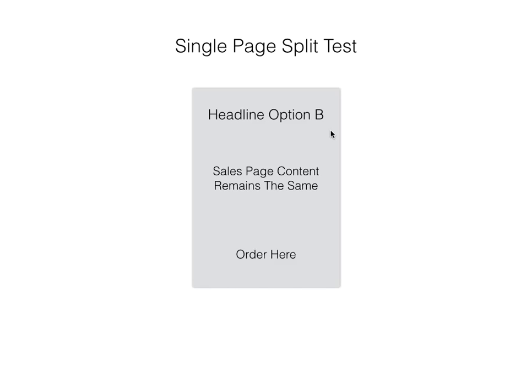Those different options can be anything at all that you want to test. You could test two different headlines, two different graphics on your page, or maybe just change something like the call to action on your order button. This is particularly useful for changing one thing at a time so that you can get precise, laser-targeted testing on your page — it's a great way to optimize your page.